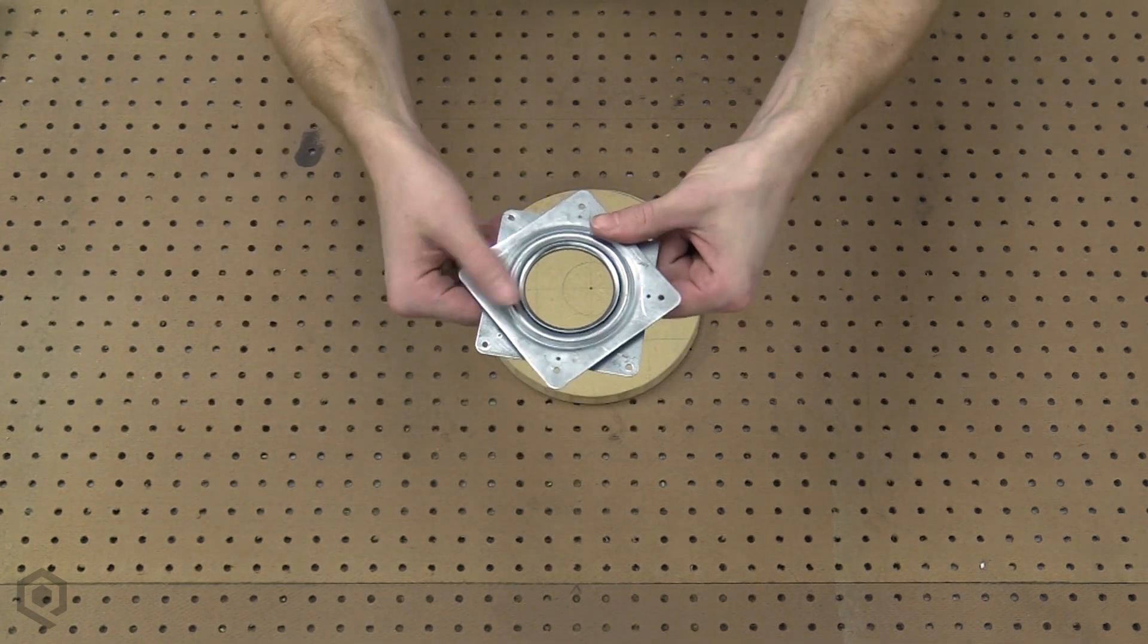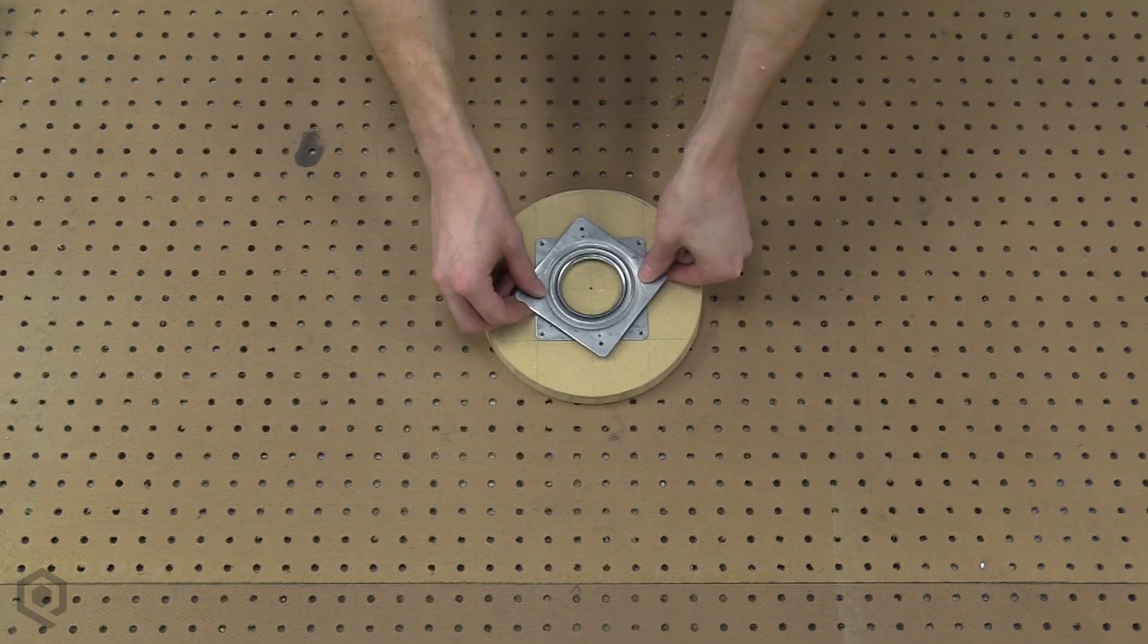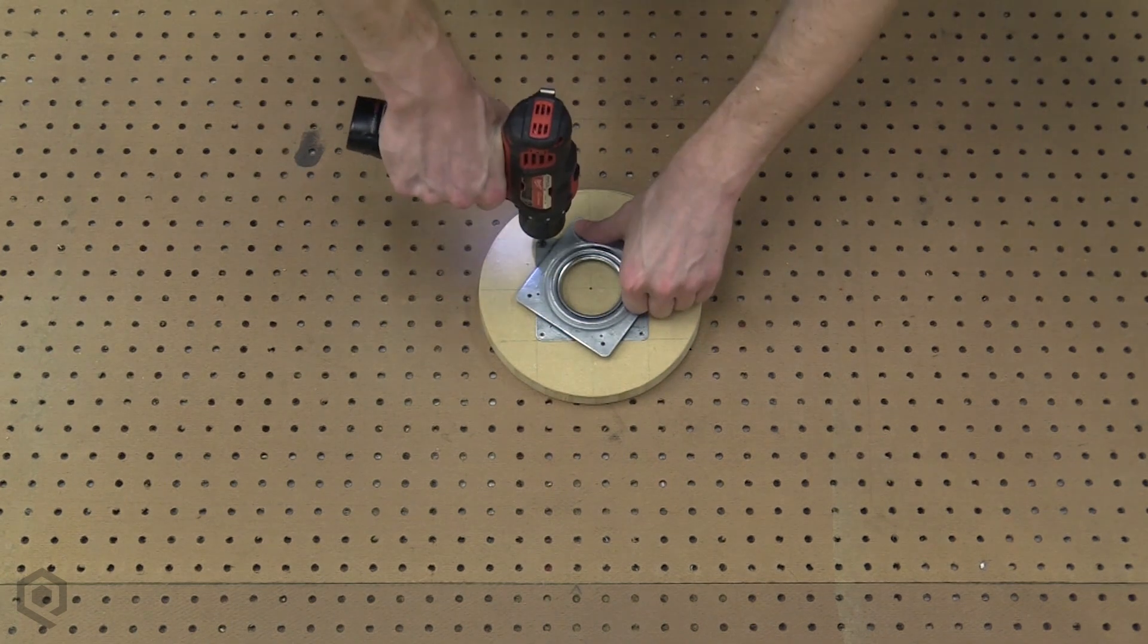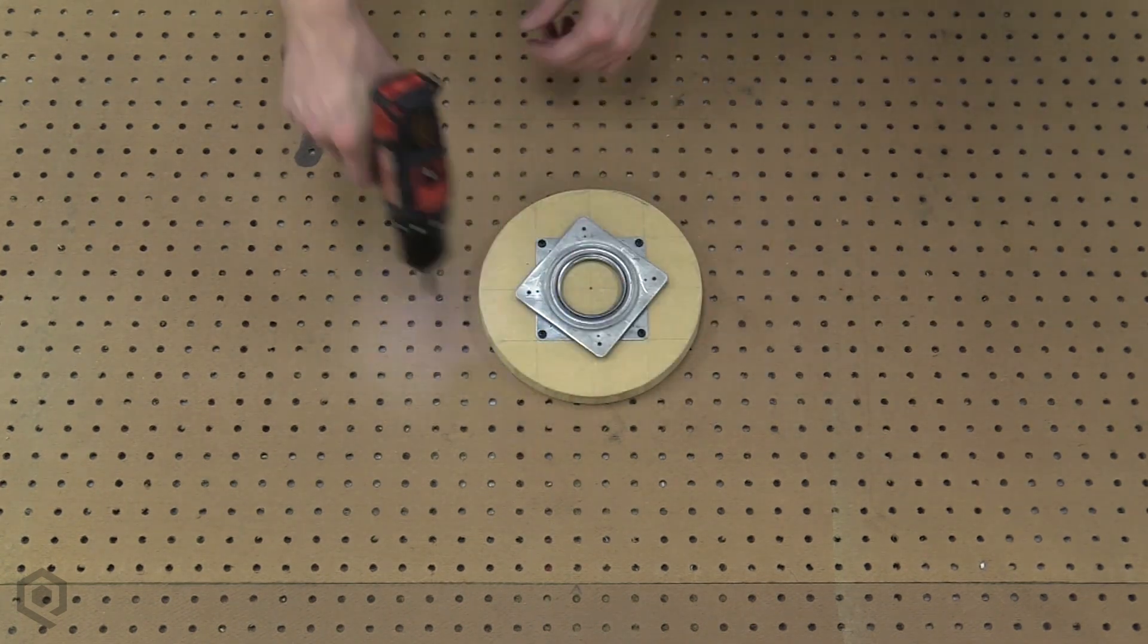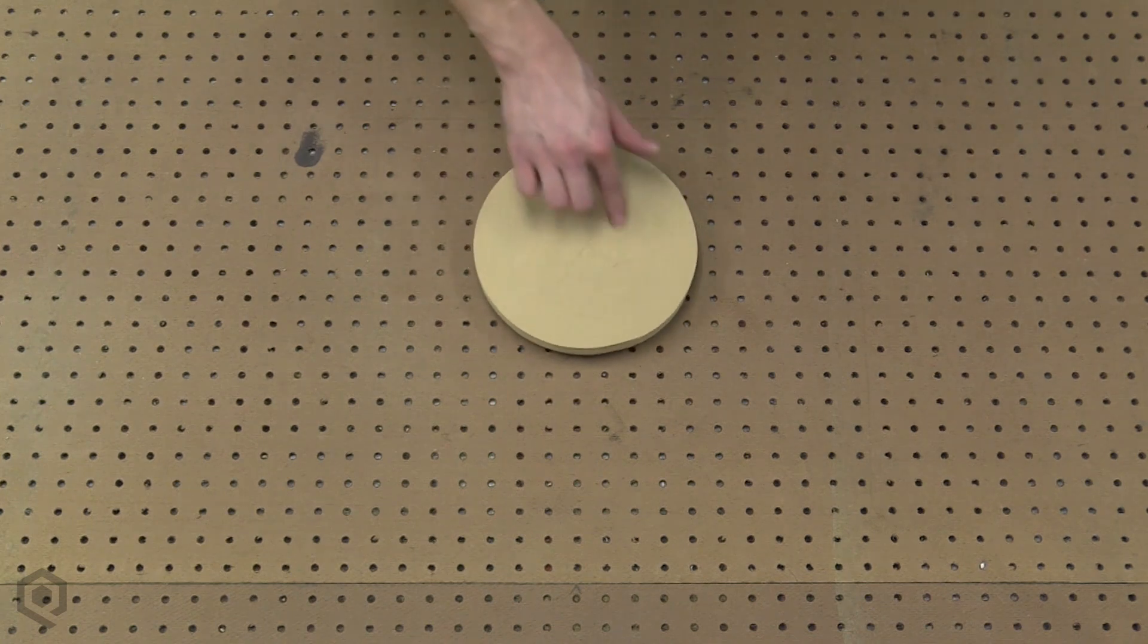Next, grab your lazy Susan and turn one side of it 45 degrees so you can get to the mounting holes. Grab your drill and screw that Susan down with the four screws I said you needed earlier. Give it a test spin. Wicked, it freaking works.